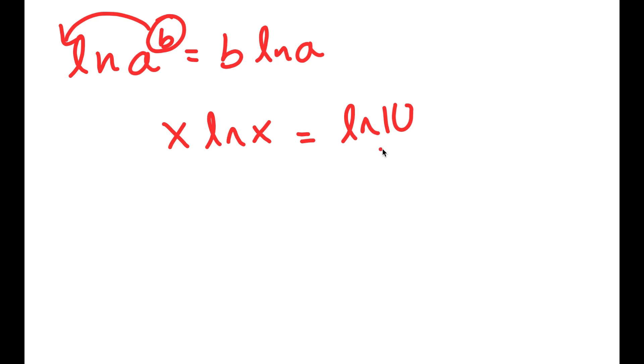And now what I'm going to do is use the Lambert W function on this. So if I have something in the form a times e to the power of a, if I take W of this, this is just equal to a.